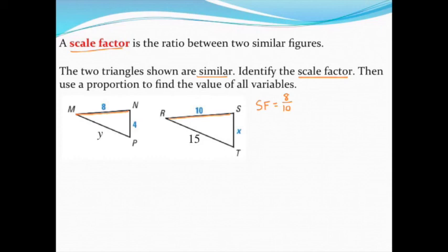However, that scale factor is wrong because I have to make sure that I always simplify. So 8 over 10 simplifies to 4 fifths. The scale factor between these two triangles is 4 fifths. One of them is 4 fifths the size of the other one.